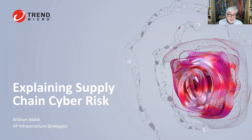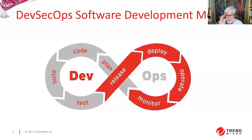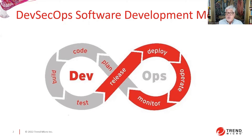Supply chain cyber risk comes about because we rely on models to understand our environment, and these models are of necessity incomplete. This is the DevSecOps software development model. Stuff goes from the planning phase, you develop some code, assemble it into a set of modules, test those, put them into production, and so on. This model shows you how it should work and the flow of the key output — the running application in a production environment — but it does not show the extensive set of third-party dependencies, various supply chains, that make this possible.